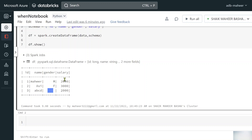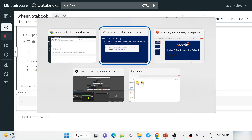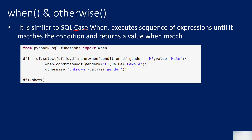Looking at the screenshot, I'm applying the when function to the same DataFrame, passing my condition. If the condition is met the value becomes 'male'; if the second condition is met it becomes 'female'. If no condition is met, it falls through to the otherwise function and takes that default value.